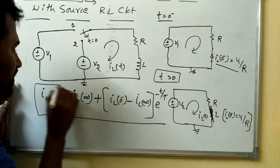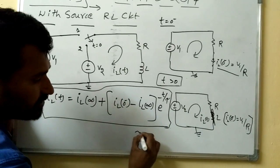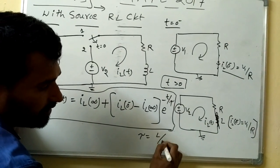So this is the formula we can use for source, with the source network. What is tau here again, time constant, which is L by R.